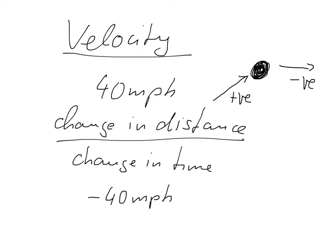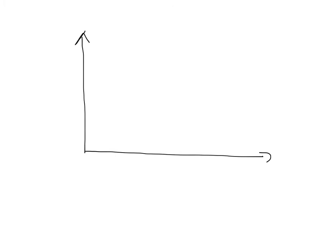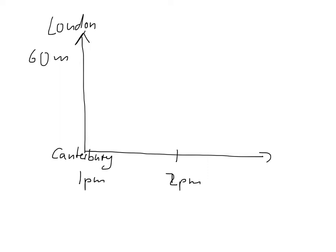Let me give you a quick example. Let's say I'm driving from Canterbury, where this university is, to London — roughly about 60 miles. On a good day it takes about one and a half hours; today it might be two hours. So if I start at 1 p.m., here would be 2 p.m., here would be 3 p.m., and eventually at 3 p.m. I arrive in London. That is my starting point.